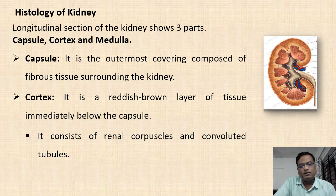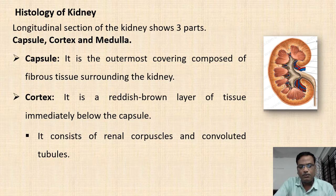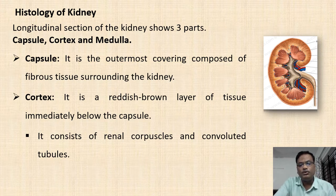The cortex is the reddish-brown layer of tissue immediately found below the capsule, and it consists of renal corpuscles and convoluted tubules of the nephrons.